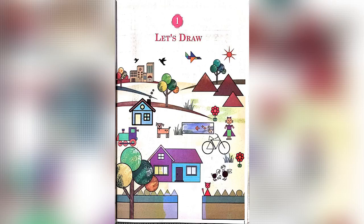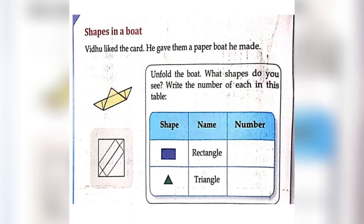Let's draw. Shapes in a boat. Vidu liked the card. He gave them a paper boat he made. Unfold the boat. What shapes do you see?